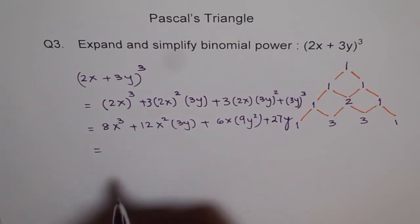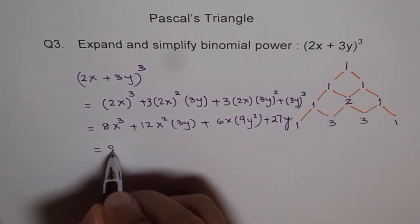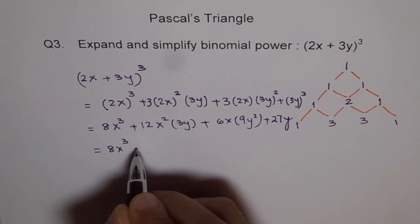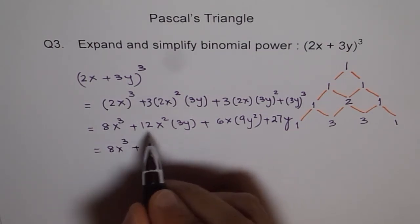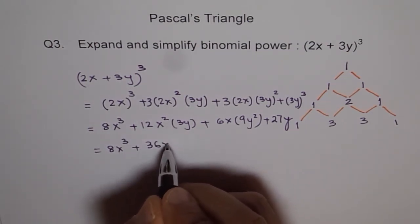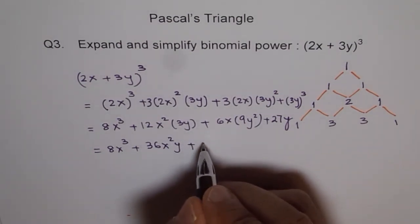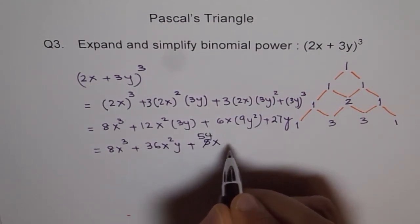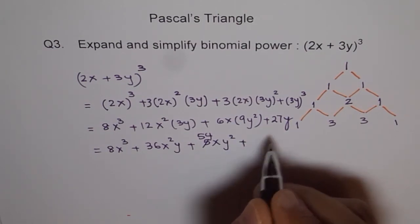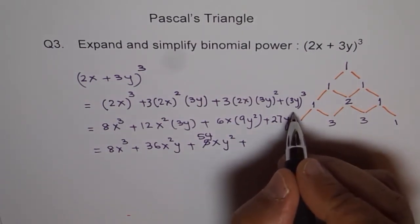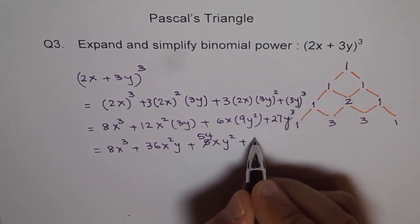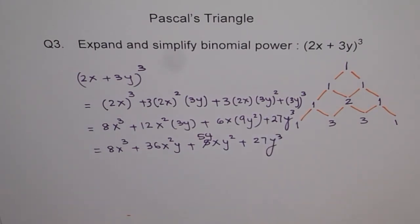Now let's combine these terms, which I forgot last time. Let's do it. 8x³ plus 3 times 12, 36x²y, plus 9 times 6, 54xy², plus 27y³.